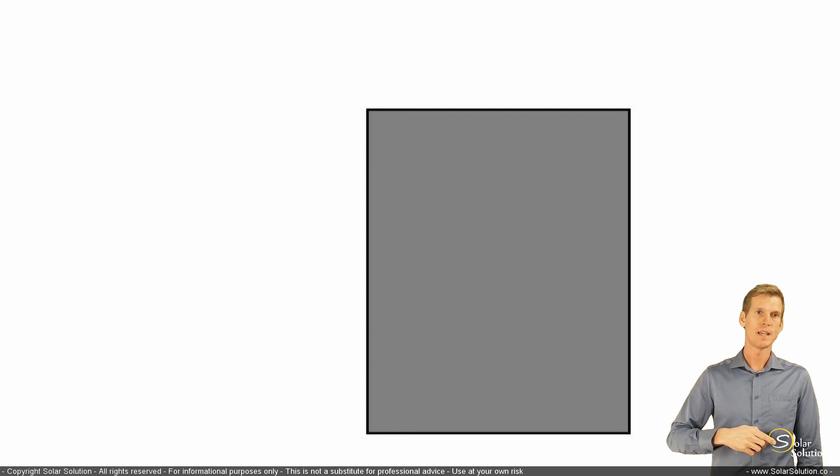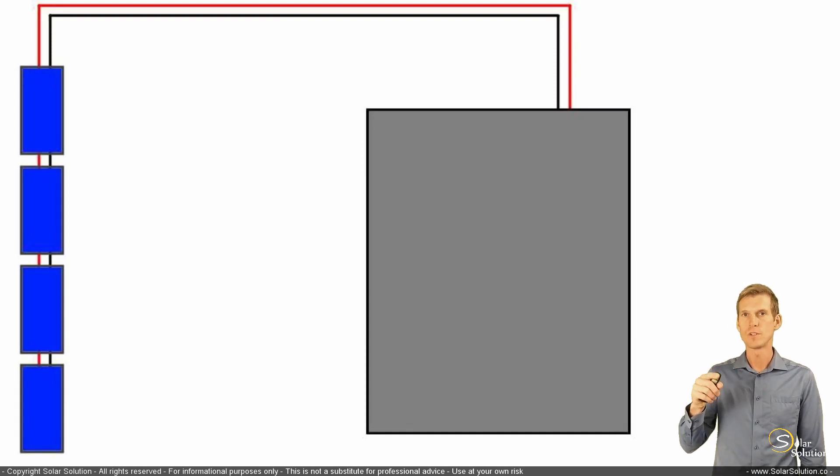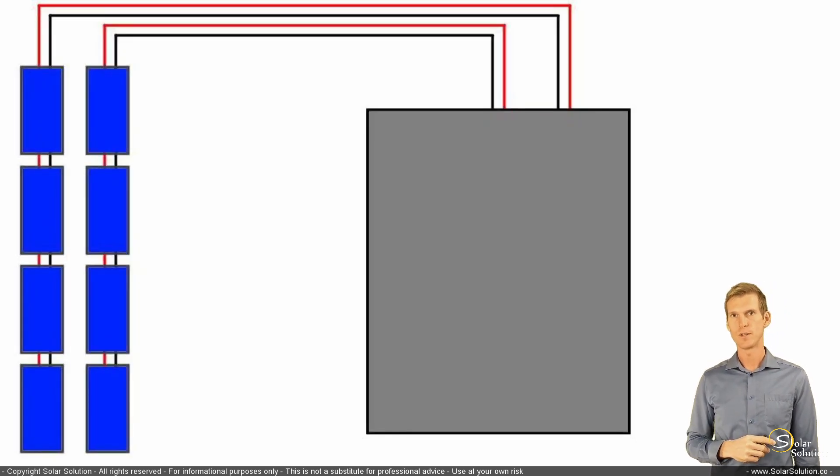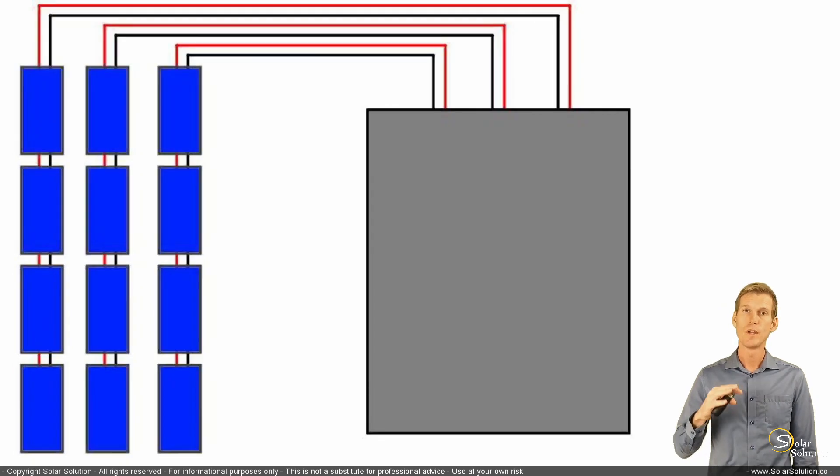We are taking a set of panels, a group of panels, and they have the positive and negative output. We feed them towards the combiner box with all the separate strings of photovoltaic modules. In this example, we provide protective equipment only on the positive output from these strings. We install the breakers - you can also do it with fuses.